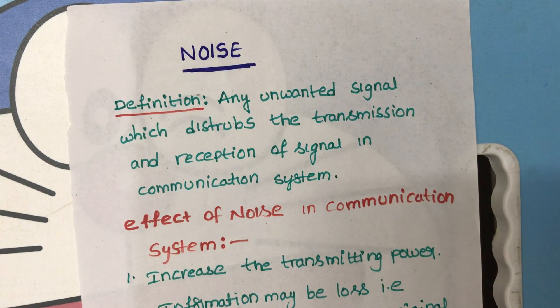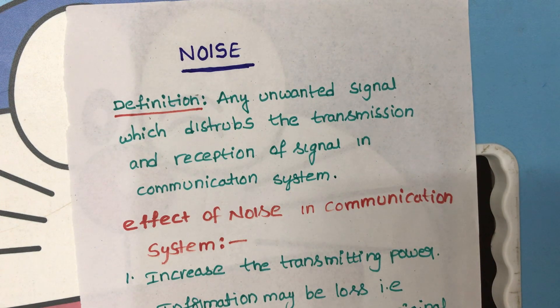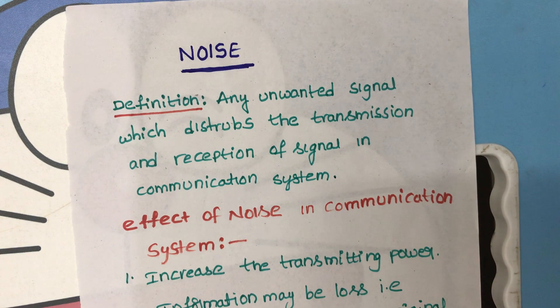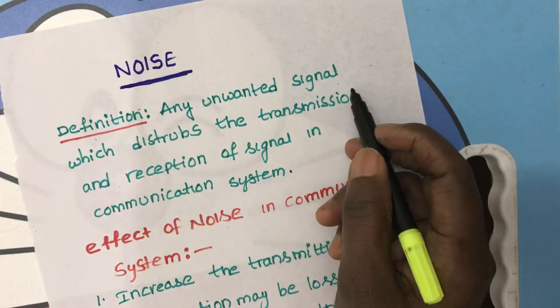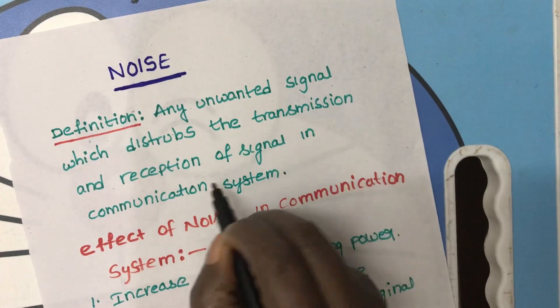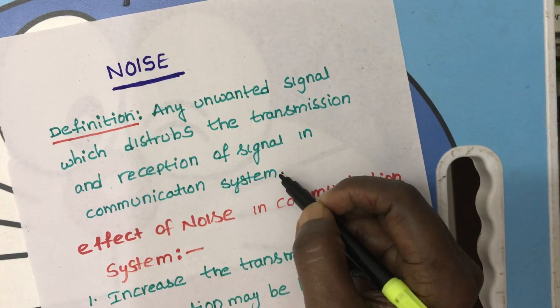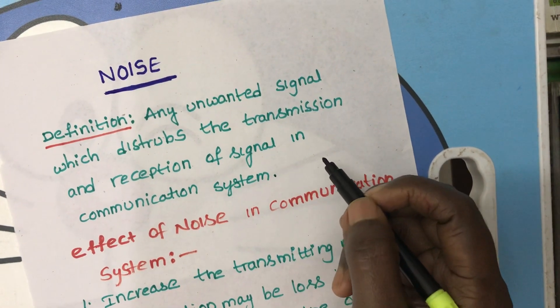In this video we are going to discuss about noise. First we will see the definition of noise and effect of noise in communication system. Noise is any unwanted signal which disturbs the transmission and reception of a signal in communication system. That means unwanted signal is added to message signal.